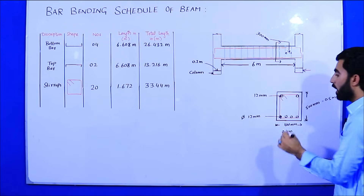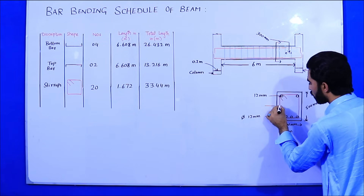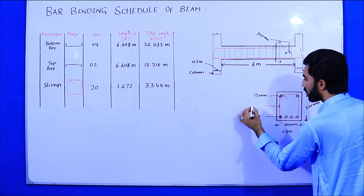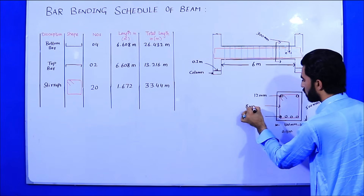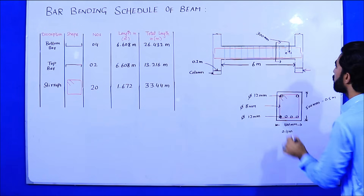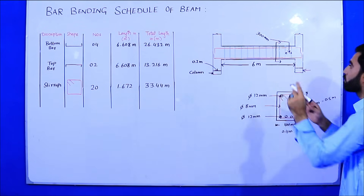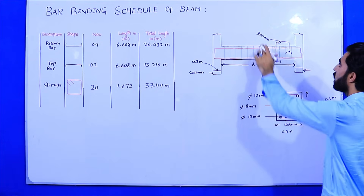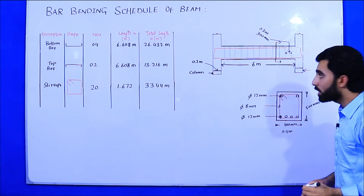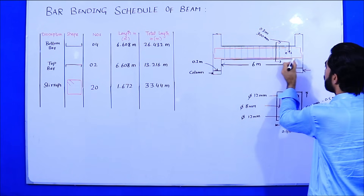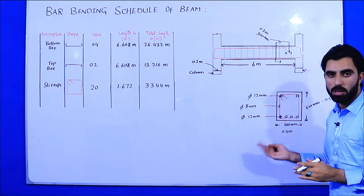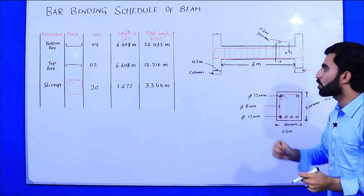The diameter of the stirrups is 8 millimeters. The stirrups are shown in red color and the spacing of the stirrups is 300 millimeters or 0.3 meter. The bottom bars are four in number and top bars are two in number in this beam.